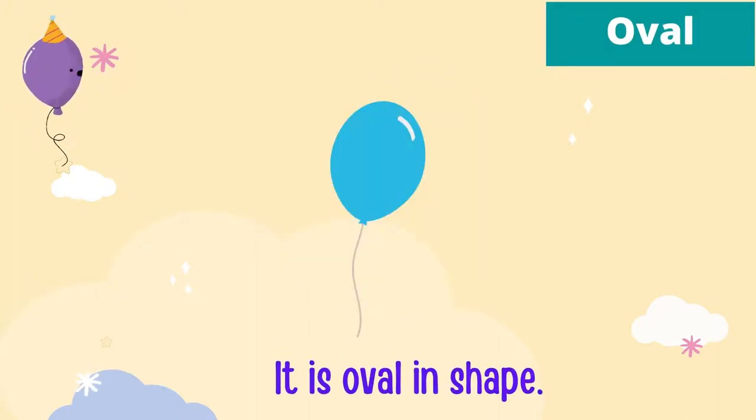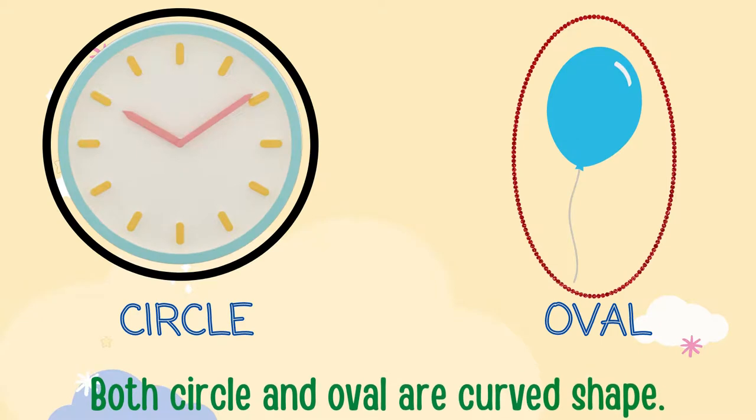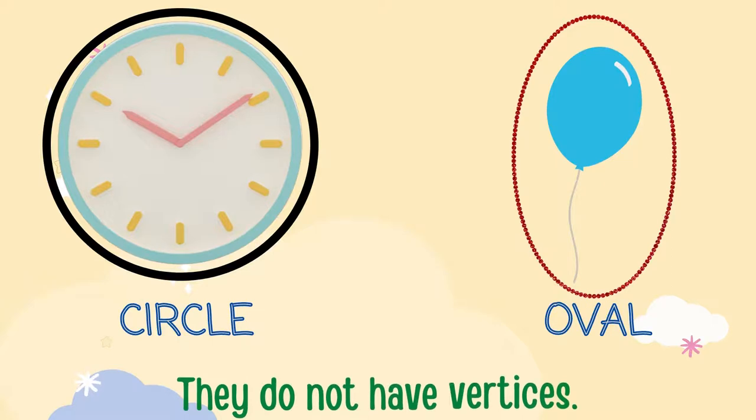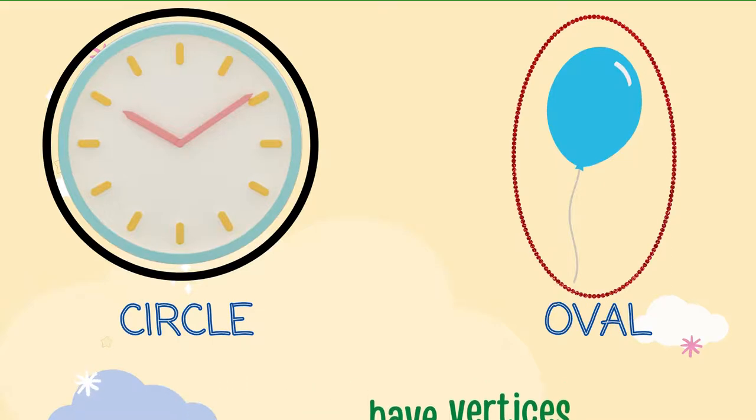Both circle and oval are curved shapes. They do not have vertices. Now let's move on to solid shapes.